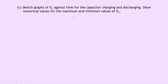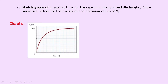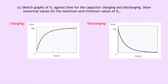Part C asks to sketch graphs of VC against time for the capacitor charging and discharging, with numerical maximum and minimum values. For the charging capacitor, VC increases from 0 over time until it reaches its maximum of 100 volts. For the discharging capacitor, the voltage across the capacitor decreases over time until it reaches 0, starting at 100 volts.